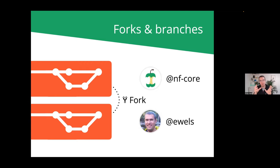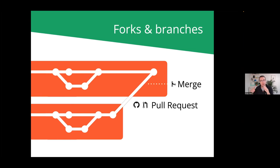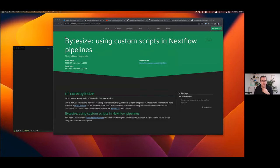Branching is typically used when multiple people are working on one repository or when working on different features in parallel — it's basically always good practice to work on a branch. Repositories can also be forked, which means you make a copy from one GitHub account to another. The git client can then interact with different remote repositories on GitHub. You can do development on your own fork and make a pull request to merge changes back into the original — usually called the upstream repository.